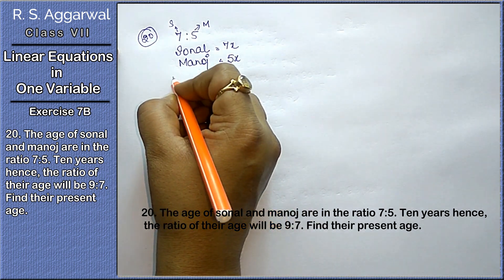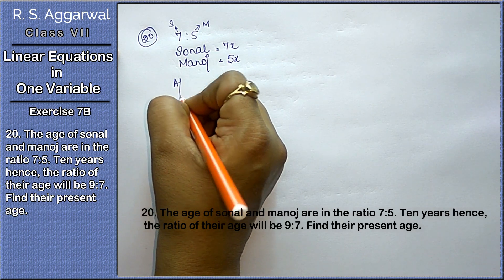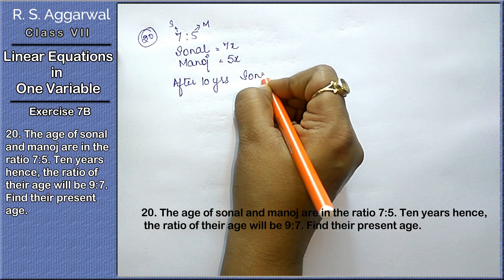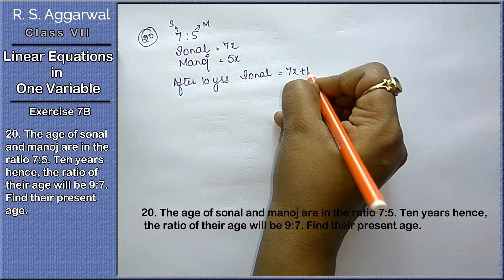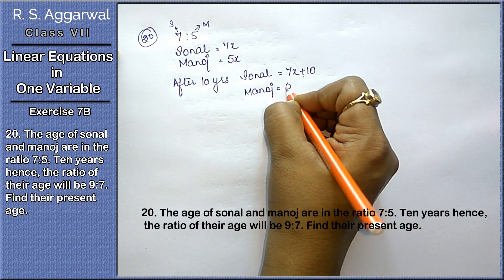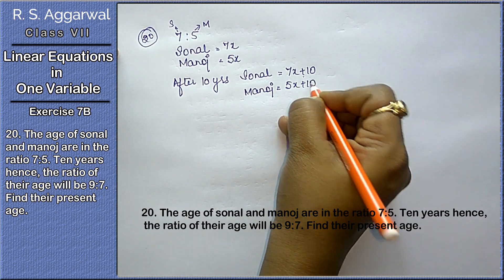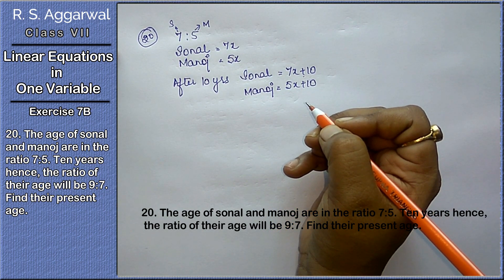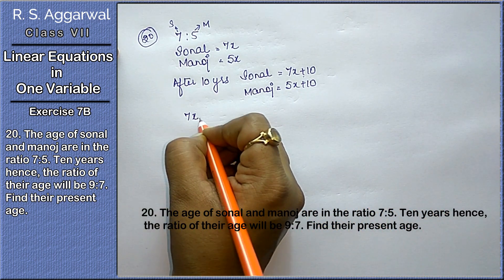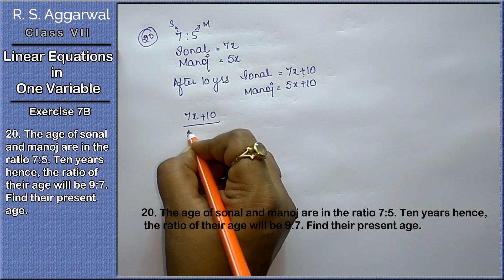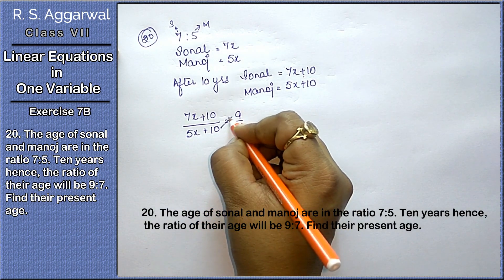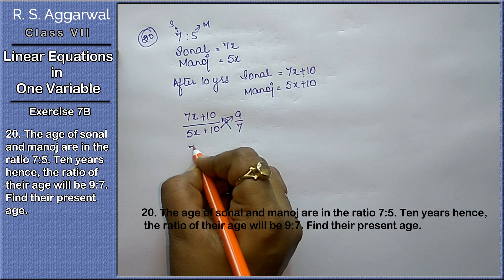10 years hence — that means after 10 years — Sonal's age will be 7x plus 10, and Manoj's age will be 5x plus 10. After 10 years the ratio of their ages will be 9 to 7, so Sonal's age upon Manoj's age equals 9 upon 7.